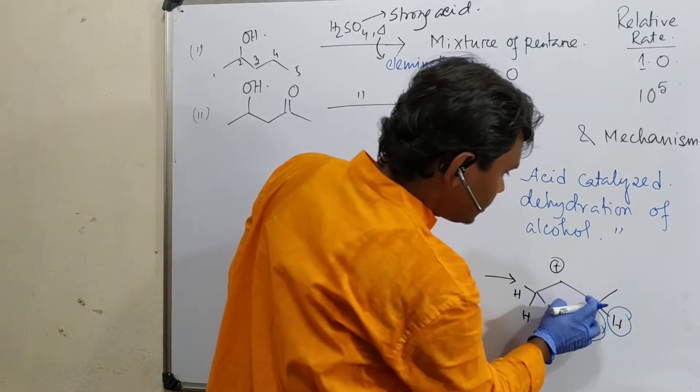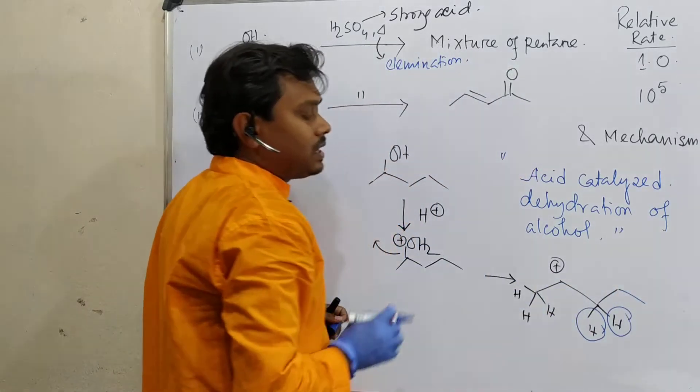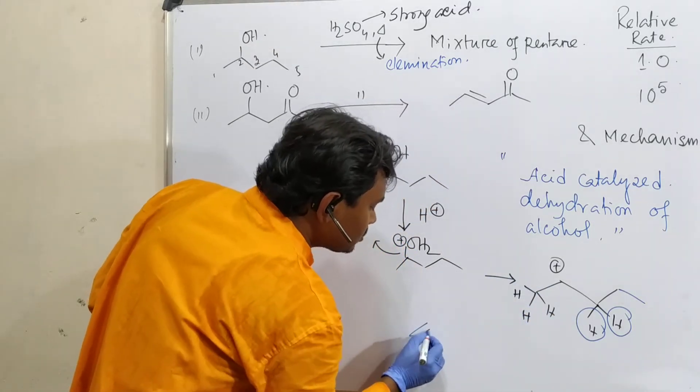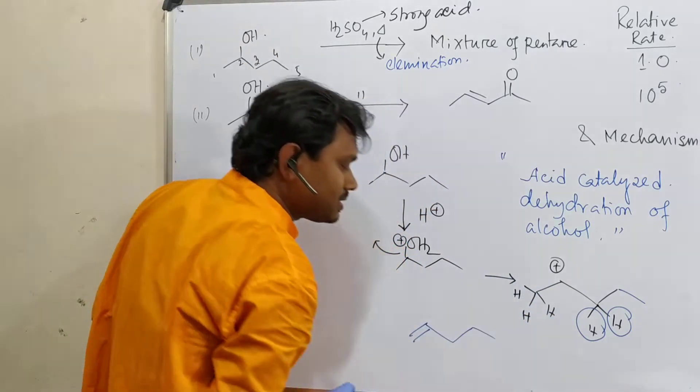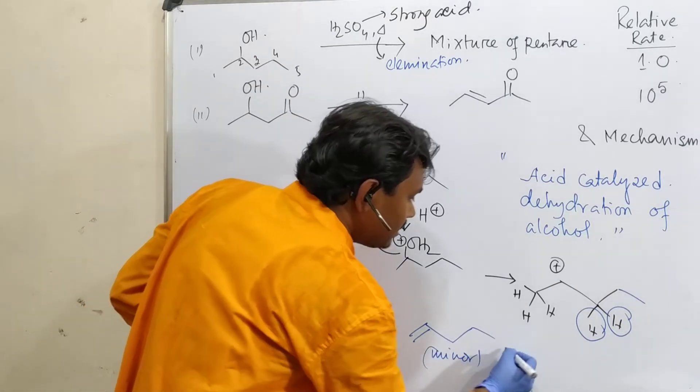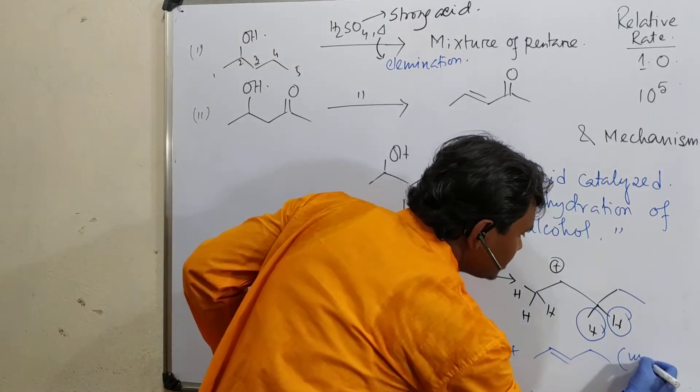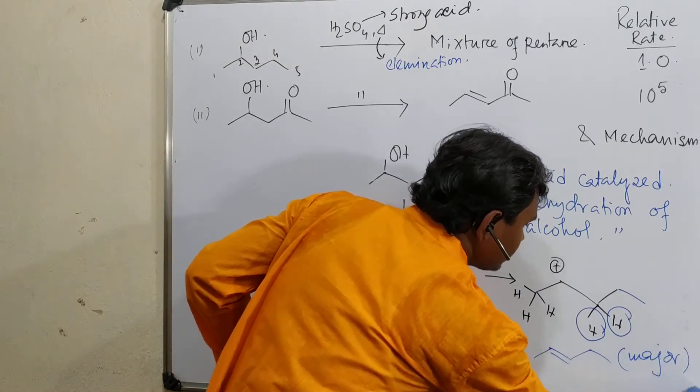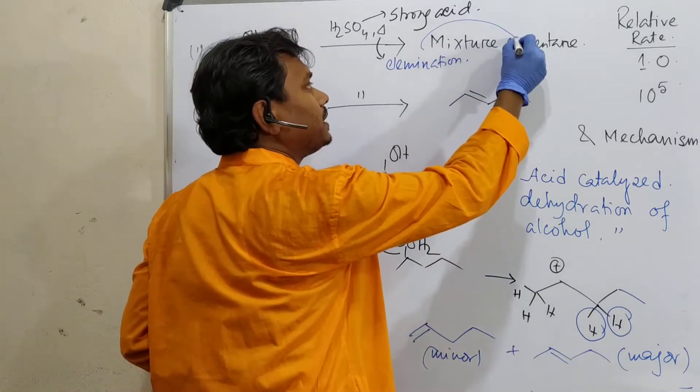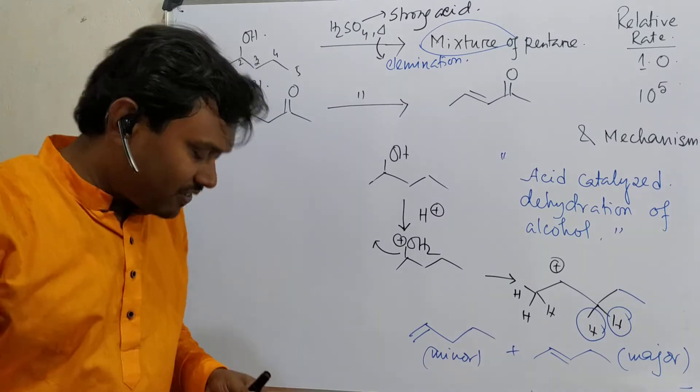Elimination of proton will occur. Question: from which side? It can occur from both sides, but logically it will prefer to happen from this side because the product pentene is more substituted. 1, 2, 3, 4, 5. Another one: 1, 2, 3, 4, 5. In this way, what is the product? This is the minor product plus this is the major product. That's why it is a mixture of pentenes, because two products are produced.